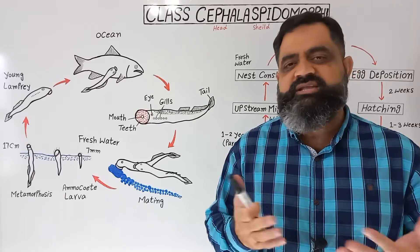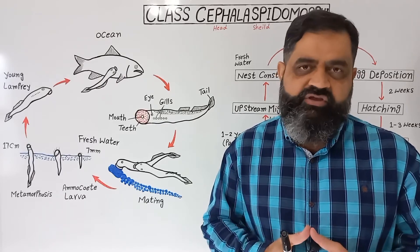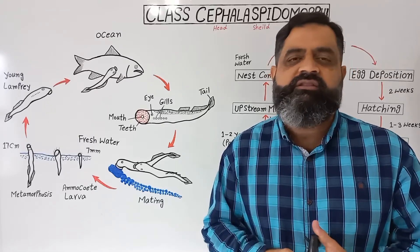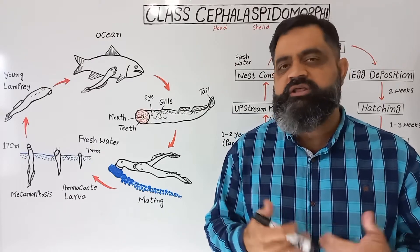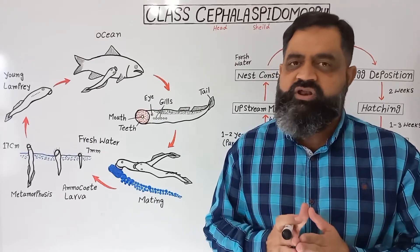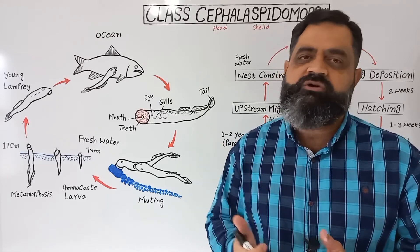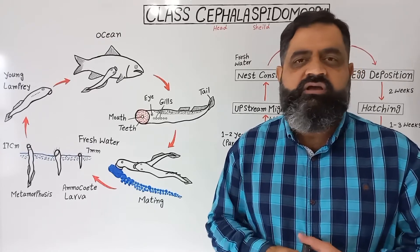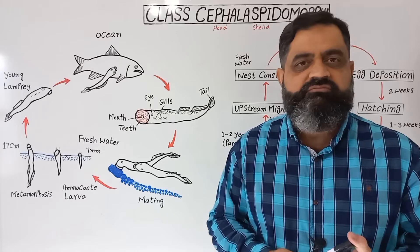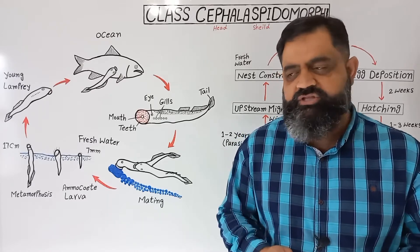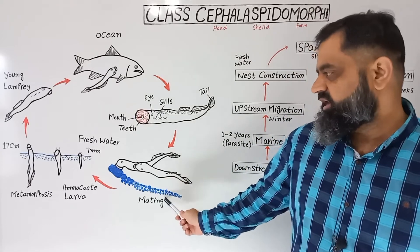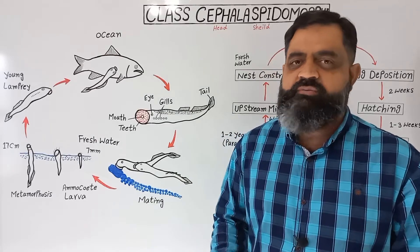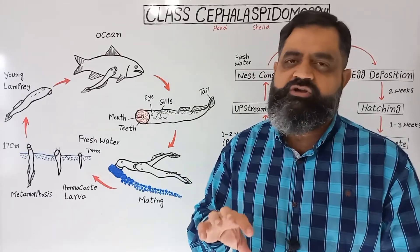After burying the eggs and completing this entire process, they die — that is the last moment of their life. After spawning, this is a kind of very instinctive behavior that they were never taught by their parents. After laying eggs in the nest, after two weeks, larvae are produced which are known as ammocoete larvae. Ammocoete larvae swim in fresh water and then bury themselves in the sand, just like amphioxus.